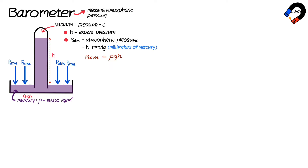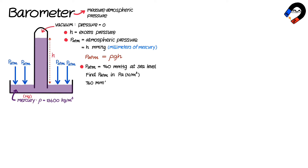and h represents the height of the mercury column. For example, at sea level the atmospheric pressure is typically 760 millimeters of mercury. To find the pressure at sea level in pascals, we convert 760 millimeters to 0.76 meters.